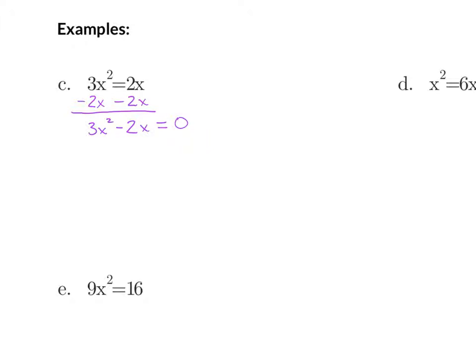We cannot combine our terms because they are not like terms, so we are left with 3x squared minus 2x equals zero. Now that we have it equal to zero, we can factor out a common factor — all we can do since there are just two terms and it's not a difference of squares — so we factor out an x. We are left with x times 3x minus 2 equals zero. Setting each factor equal to zero: x equals 0, or 3x minus 2 equals 0. For x equals 0, we're already done.